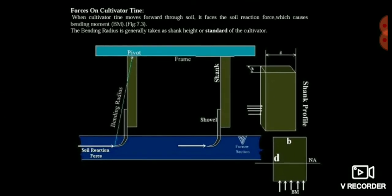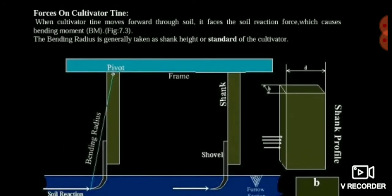You can see the width here. The depth is represented with D and the thickness with B — D is the depth of the cultivator sank and B is the thickness of the cultivator sank. Remember both D and B, because they are very useful in further lectures.